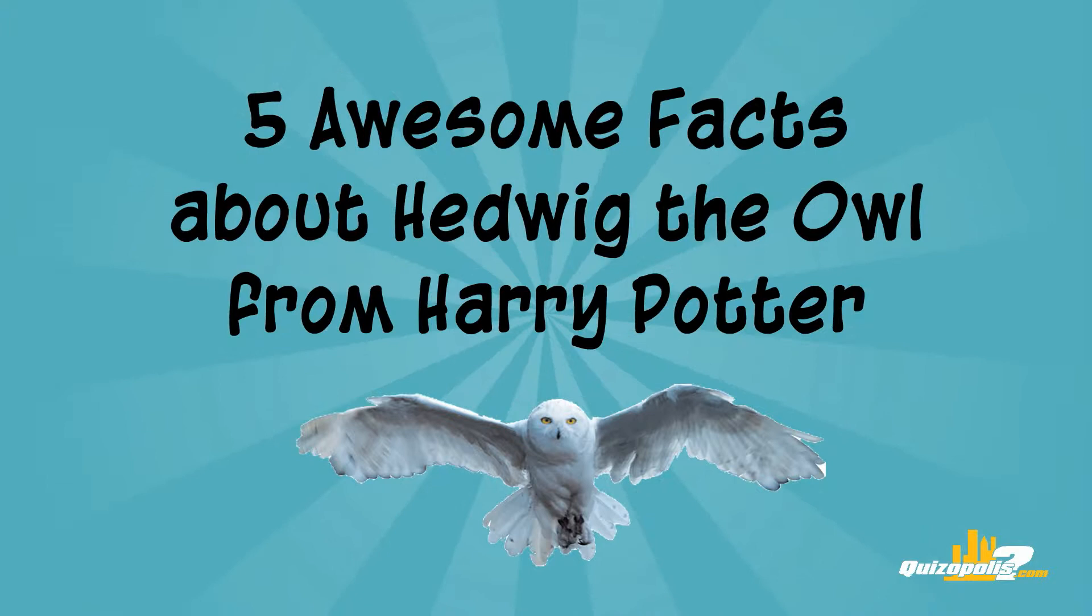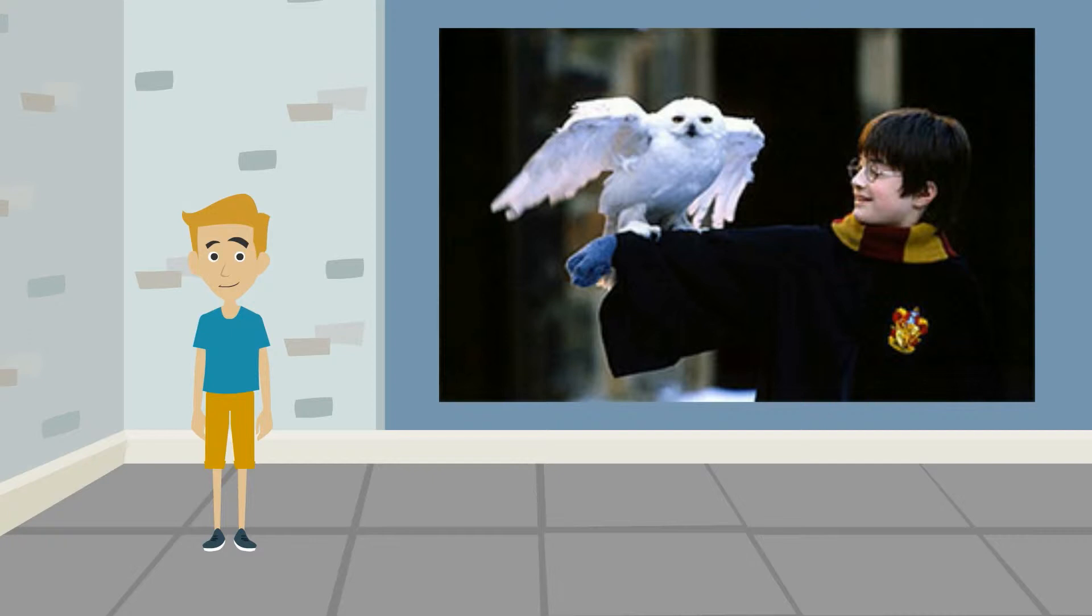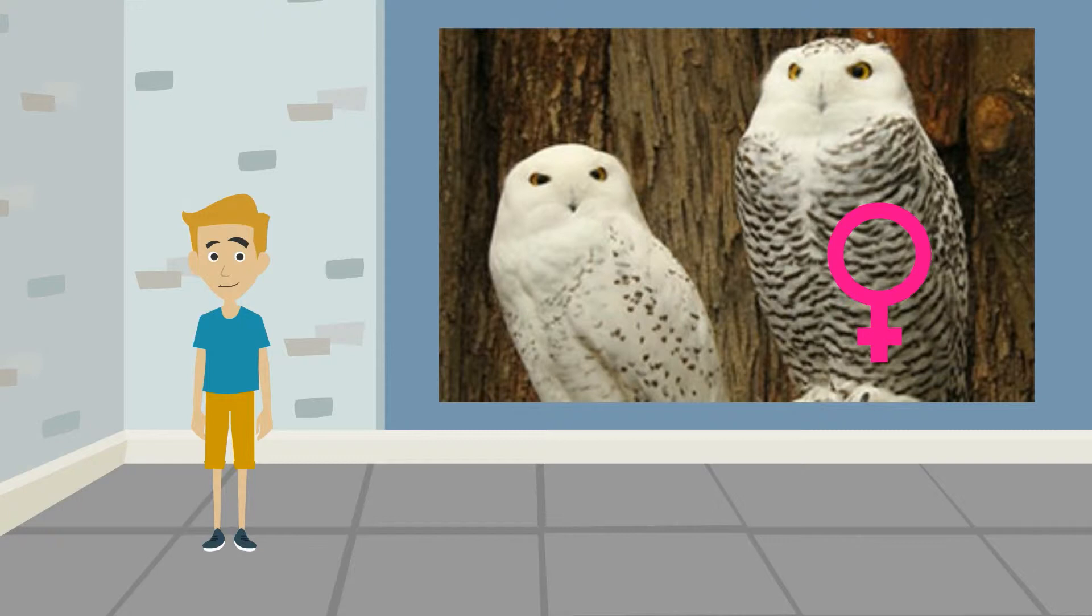Fact number 1. Hedwig was one of the first characters to be cast for the Harry Potter movie, and several different owls played Hedwig over the years. Even though Hedwig is a female owl, the owls that played Hedwig were male. The male owls have a whiter plumage than female owls and are lighter, which makes it easier for other actors to work with them.